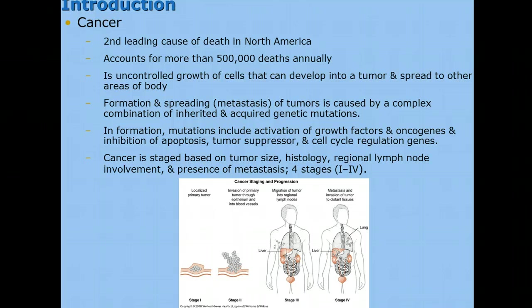When we look at cancer, we usually stage it based on tumor size, histology, lymph node involvement, and presence of metastasis, which is the spreading. There are four stages. So if one of your friends walks up to you and says their family member is in stage 6 cancer, there is no such thing. There are only four stages.